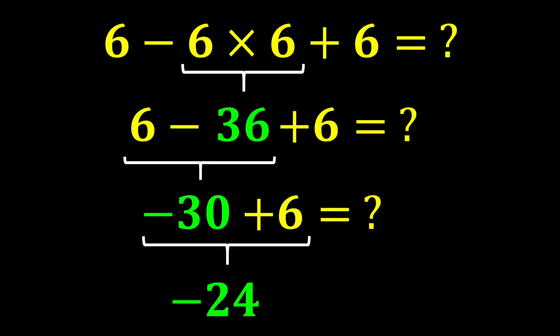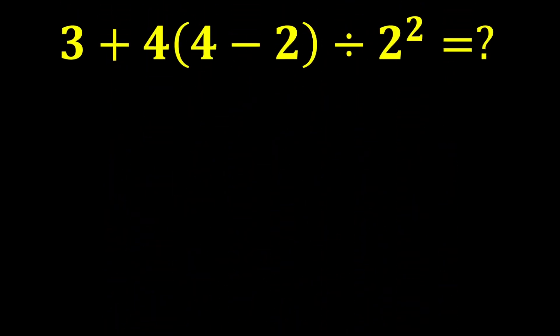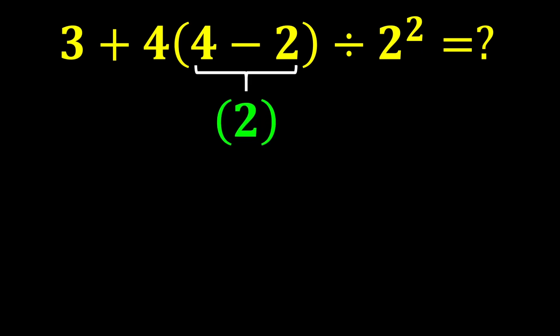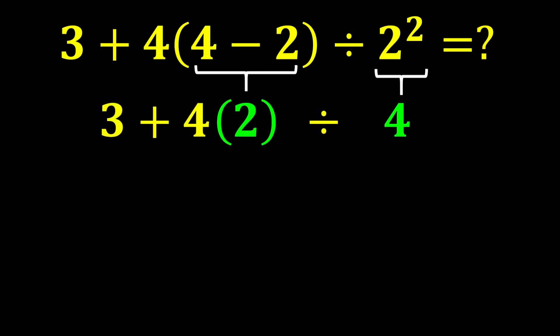Third example: 3 plus 4 times (4 minus 2) divided by 2 squared. According to PEMDAS, we first calculate the parentheses: 4 minus 2 gives us 2. Next, we calculate the exponent: 2 squared gives us 4. And the expression becomes 3 plus 4 times 2 divided by 4.